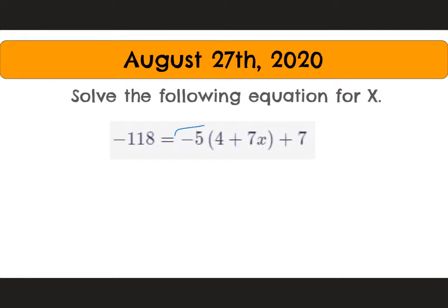Be very careful, some students will only distribute 5, but this is actually a negative 5. So we distribute negative 5. Now we end up with negative 20 minus 35x plus 7 is equal to negative 118.